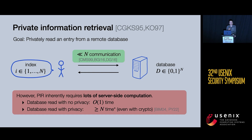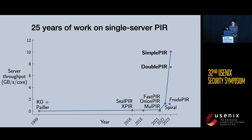In this work, our goal is to make this linear scan as concretely efficient and as fast as possible. The metric I'll use throughout this talk to denote the speed of a PIR scheme is server throughput — the ratio between the PIR database size and the server time to answer a query — measured in gigabytes per core-second.